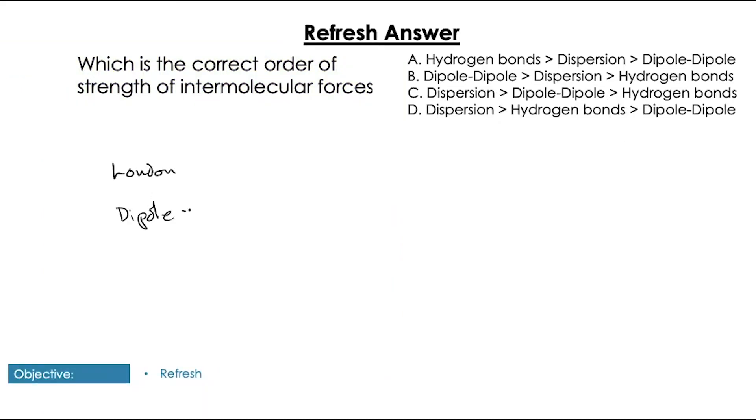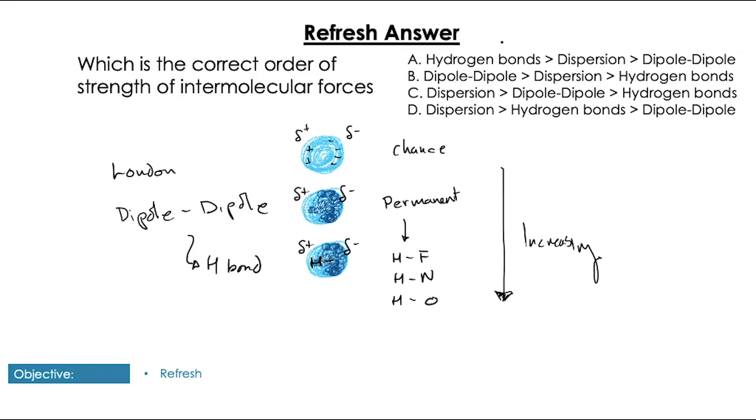Okay, so what's the correct order of intermolecular forces? Well, we know that London forces exist in all molecules from the random movement of electrons in a molecule. Then we have dipole-dipole, in which we have a permanent dipole in a molecule. And then, further from that, we have hydrogen bonds, where we have the very strong polarity caused by the bonding of hydrogen to oxygen, fluorine, or nitrogen. And they are the strongest. So the answer is, of course, C.